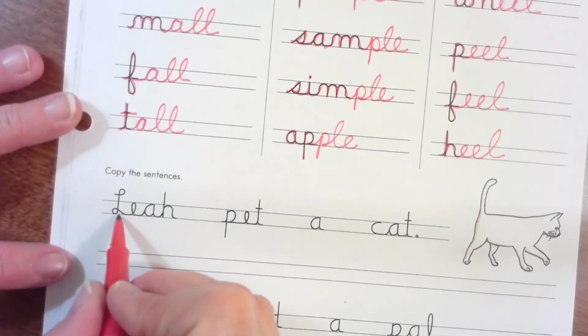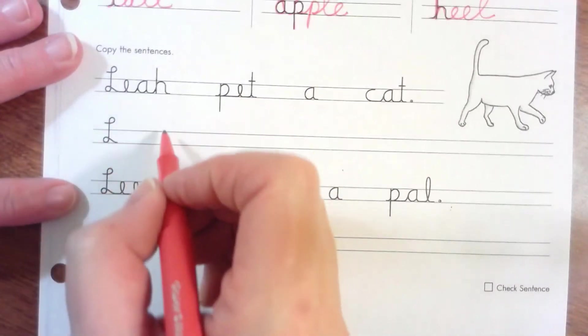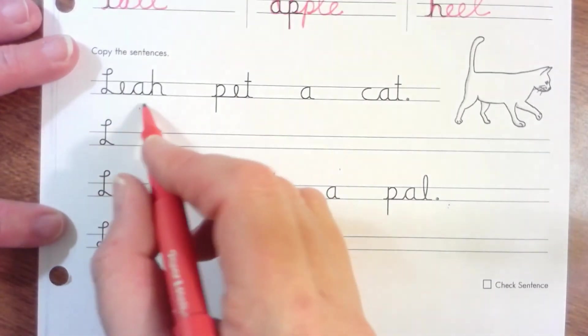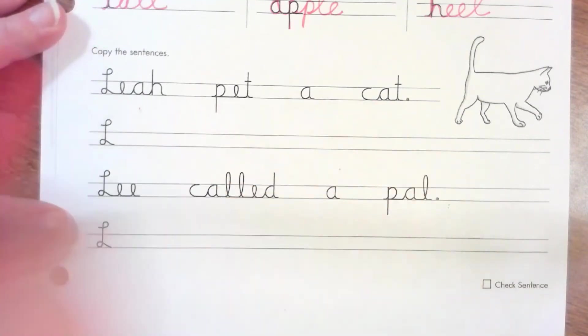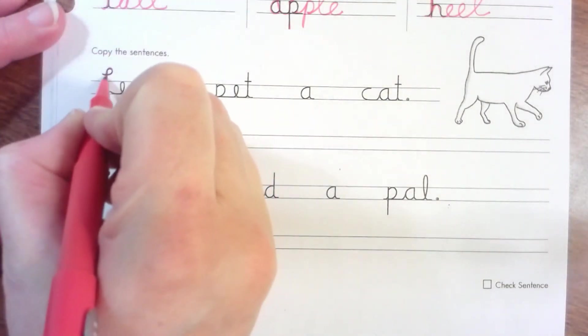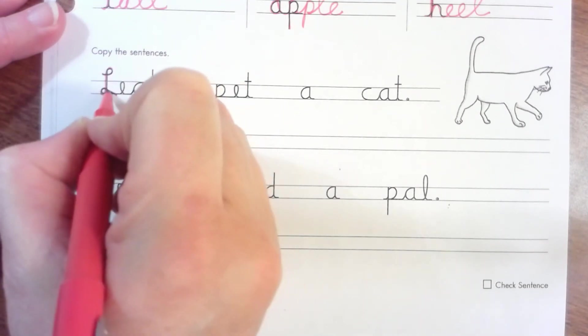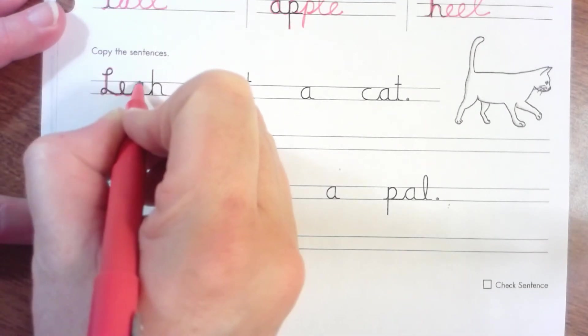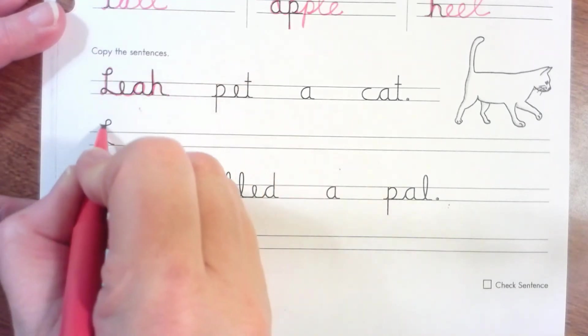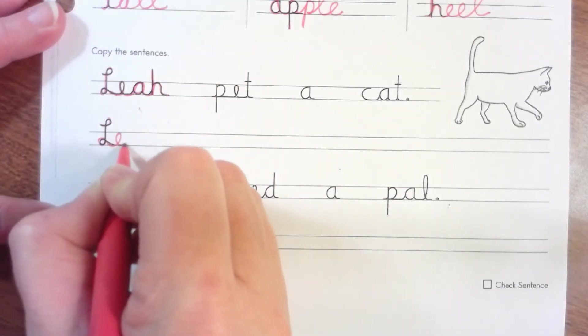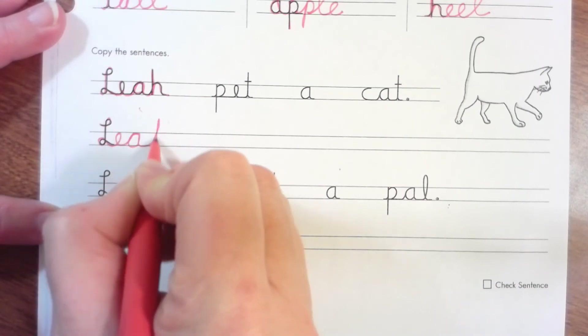Now this is muscle memory and we write it back down on the next sentence. So it says Leah pet a cat. Leah is a name. This is a capital L. And again, I know we don't know this one, so we're just going to go into the E-A-H. E-A-H.